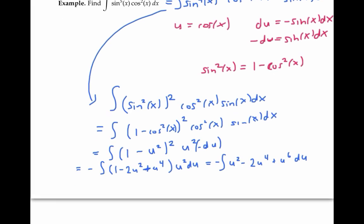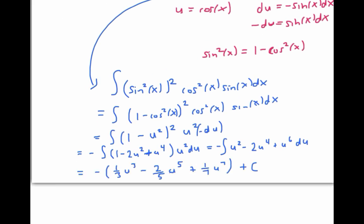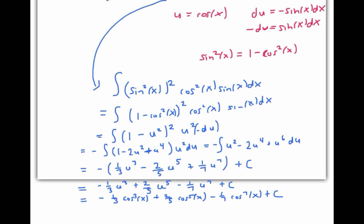Now I can integrate, distribute my negative sign, and finally plug in cosine of x for u. That completes this problem.